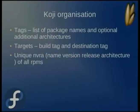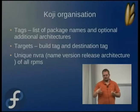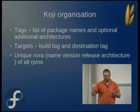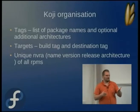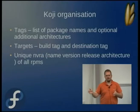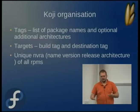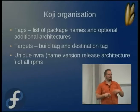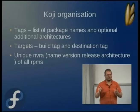Inside Koji, things are organized by tags and targets. Tags are a collection of things — generally package names — with optional architectures. In Fedora, all RPMs are built into a target; for Rawhide, we use 'dist-f15' as our target. It builds things using the tag defined for that target — 'dist-f15-build' — which has the group metadata and all packages available to it. At the end of the build, it puts the package into a destination tag, 'dist-f15', and Koji Raw sees the new package and creates a new repository.